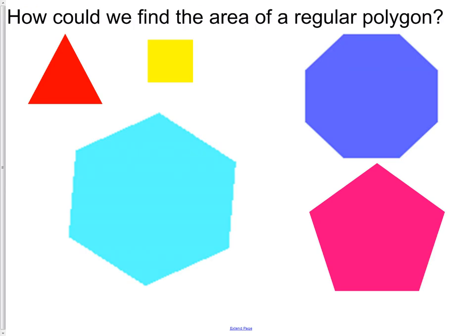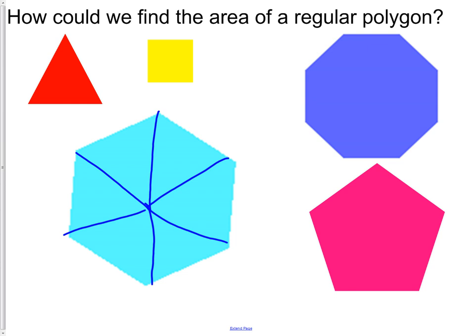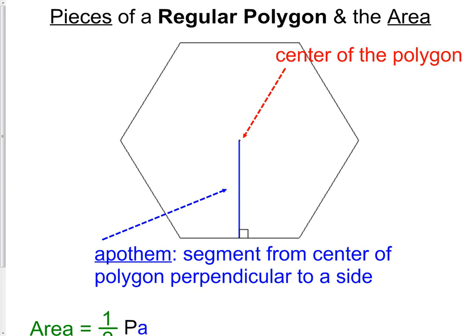How can we find the area of a regular polygon? A regular polygon is a little bit challenging, but it has consistent characteristics that make it easy to calculate the area. We could divide the shape into a bunch of triangles and get all of their areas — that would work — but sometimes we don't have that information. So we use a formula based on the pieces of a regular polygon: the center of the polygon and the apothem.